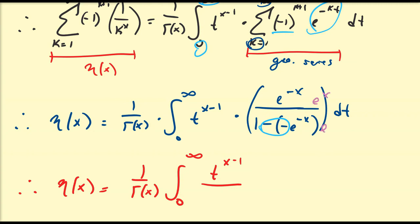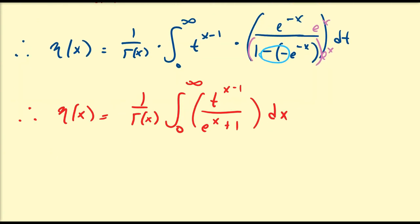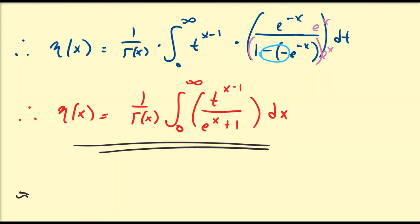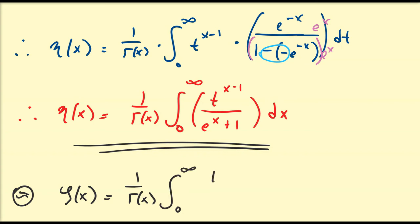Multiplying top and bottom by e^t turns e^(−t) to 1, giving 1 over (e^t plus 1) on the bottom. So the integral representation of the eta function is: eta of x equals (1/Γ(x)) times the integral from 0 to infinity of t^(x−1) divided by (e^t plus 1) dt. Compare this to the Riemann zeta function's integral representation: (1/Γ(x)) times the integral from 0 to infinity of t^(x−1) divided by (e^t minus 1) dt — only a plus vs. minus difference.